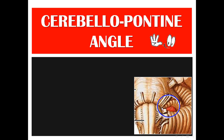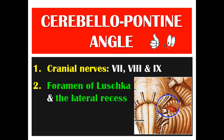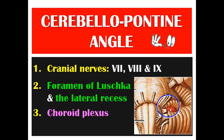The cerebellopontine angle is surgically very important. It is located between the cerebellum, pons, and medulla. It contains cranial nerves: the facial nerve, vestibulocochlear nerve, and glossopharyngeal nerve. It also contains the foramen of Luschka and the lateral recess of the fourth ventricle, the choroid plexus of the fourth ventricle exiting from the foramen of Luschka, and an artery from the basilar artery called the AICA (anterior inferior cerebellar artery).